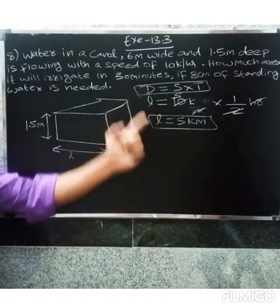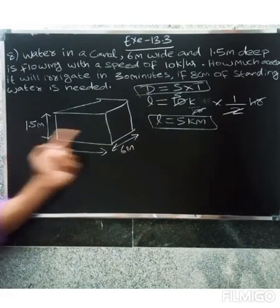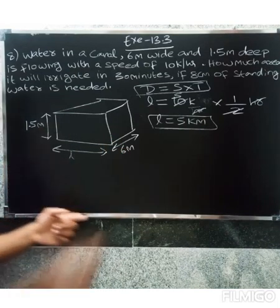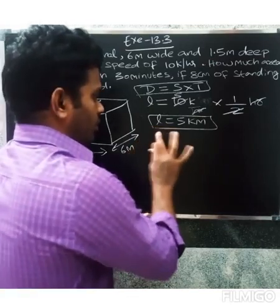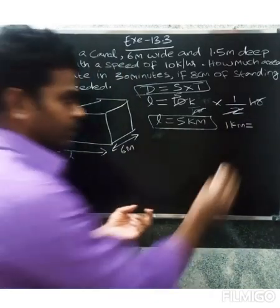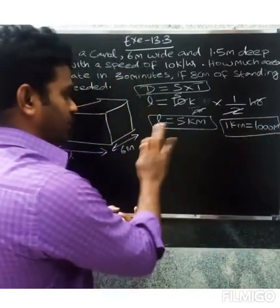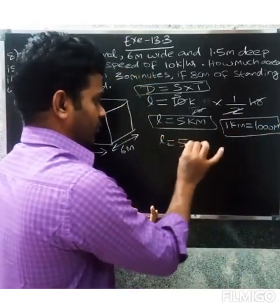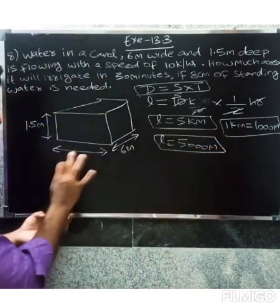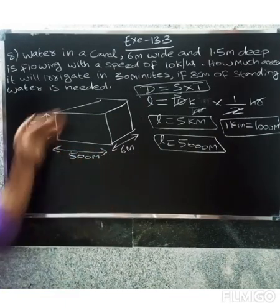Now, L equals 5 kilometers. We convert to meters: 1 kilometer equals 1000 meters, so L equals 5000 meters.